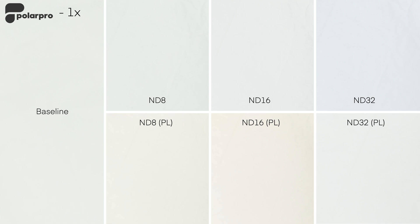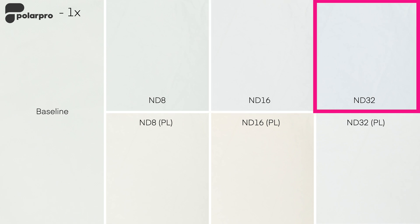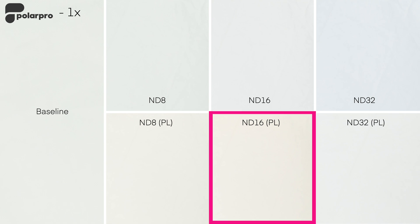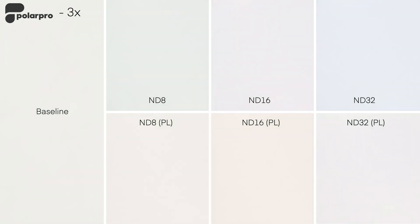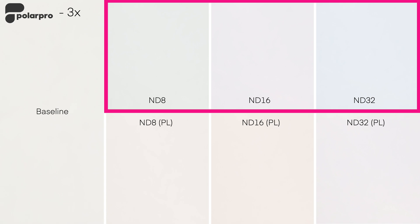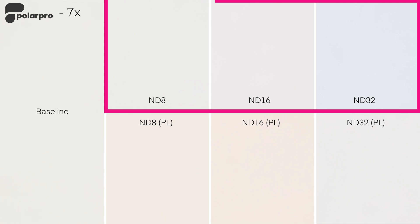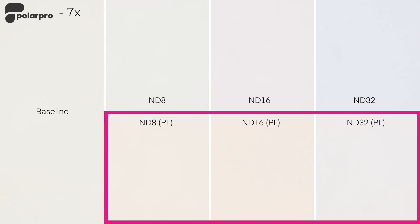Unfortunately, the same can't be said about the Polar Pro non-polarized filters. The density was good, but the neutral part was not. At 1x, the non-polarized filters were all over the place — ND16 showed a little purple, ND32 shifted to blue. The polarized version performed well, with only the ND16 shifting slightly warmer. At 3x, the polarized filters did well, but the non-polarized ND8, ND16, and ND32 showed green, purple, and blue tones respectively. At 7x, the non-polarized filters showed the same green, purple, and blue shifts, while the polarized filters again performed really well.